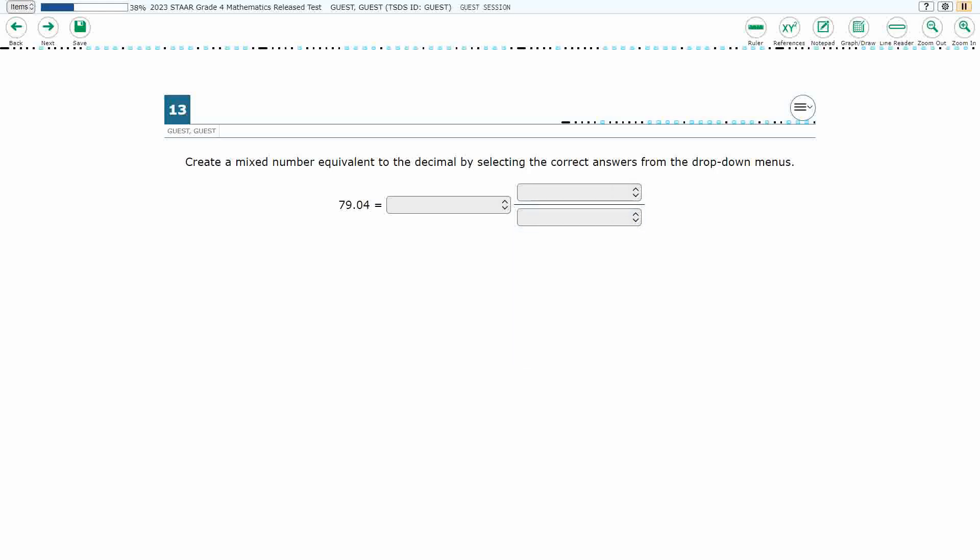All right, so we've got a mixed number that we need to create here, and you notice we've got three drop-downs. What we're going to do is take a look at these options. So let's go ahead and just take a look. So we have 79, 7,900, or 7,904.